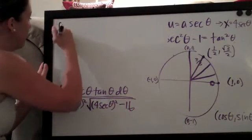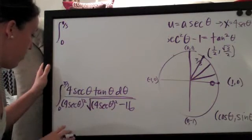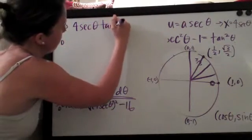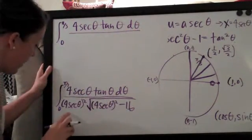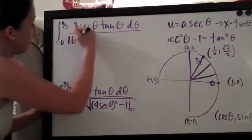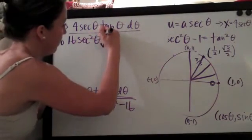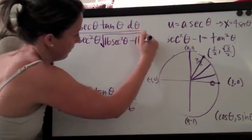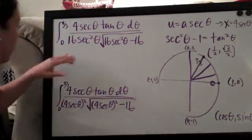The first simplification will look like this, on the range pi over three and zero. We'll keep everything the same on the top: four secant theta tangent theta d theta. On the bottom, since this is squared, this four secant theta will turn out to be sixteen secant squared theta. And we'll have times the square root of sixteen secant squared theta minus sixteen. So that was our first simplification.